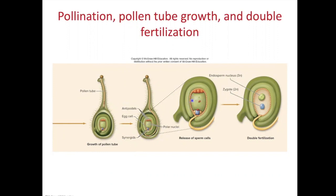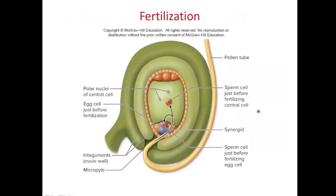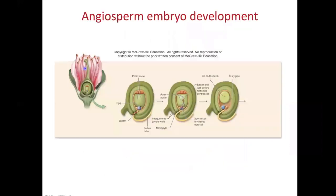One sperm cell fertilizes the egg, and the other fertilizes two nuclei in a larger structure called the polar cell with two polar nuclei inside it. What this results in is a diploid zygote — that's going to become our next sporophyte. The other fertilization produces triploid tissue called endosperm. The endosperm is identical to the zygote except that it's triploid, and it becomes very metabolically active to provide nutrition to the developing embryo. This means the zygote is no longer nourished by gametophyte tissue — it's nourished by this unique tissue called endosperm. These two fertilization events together are what we call double fertilization.